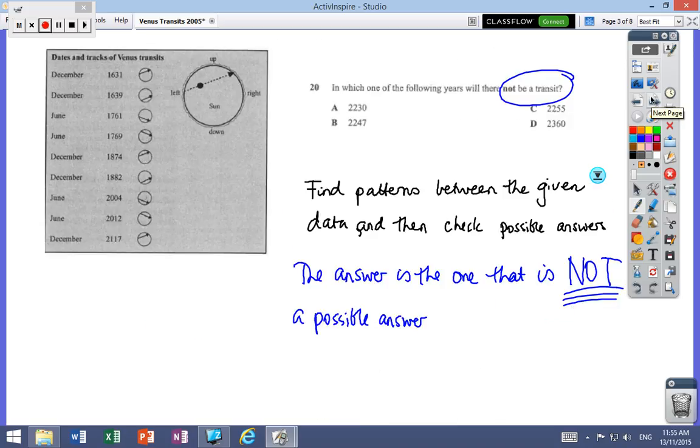Question 20—I've brought the table back in again. Which of the following years will there not be a transit? Obviously the word 'not' is very important. We've got to find patterns between the given data and then check possible solutions. There'll be three answers that are right and one that's not right. You're trying to do these questions in under two minutes, so when you're ready, have a go.